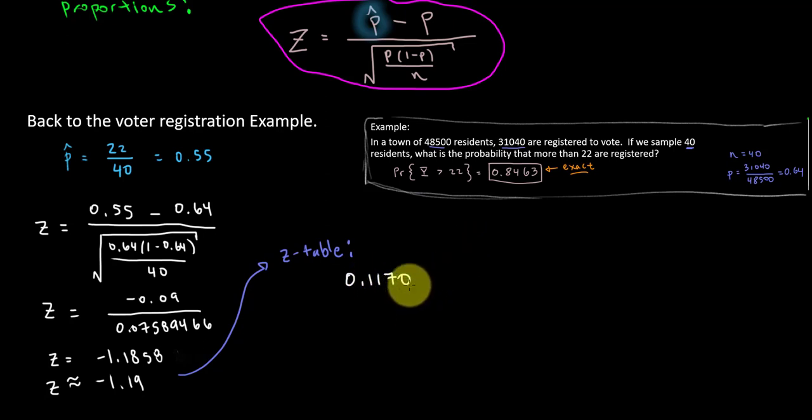Now that's not the answer, because remember, this is a greater than question. The z-table only gives us less than probabilities. So we need to take the complement, and we get the solution of 0.8830.